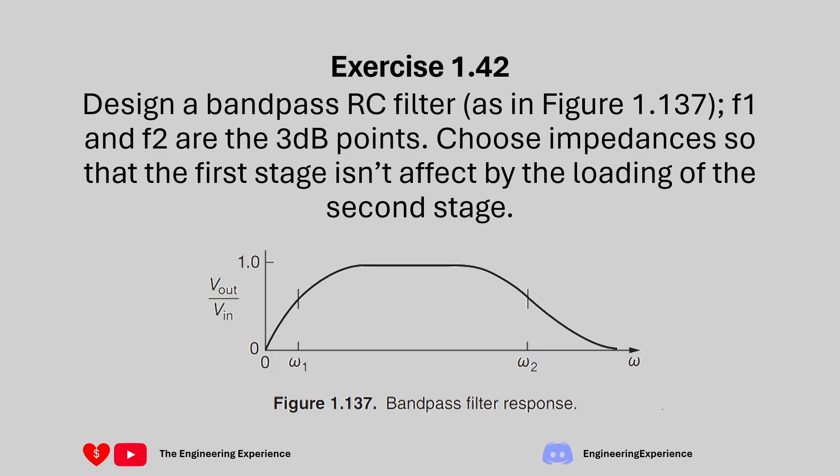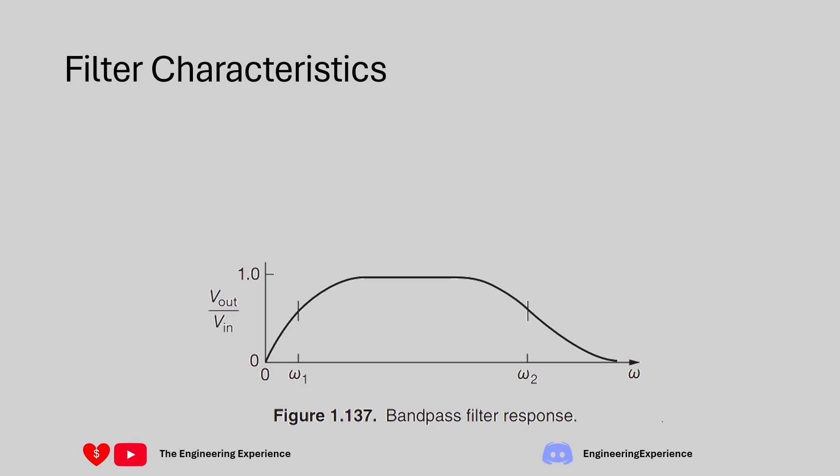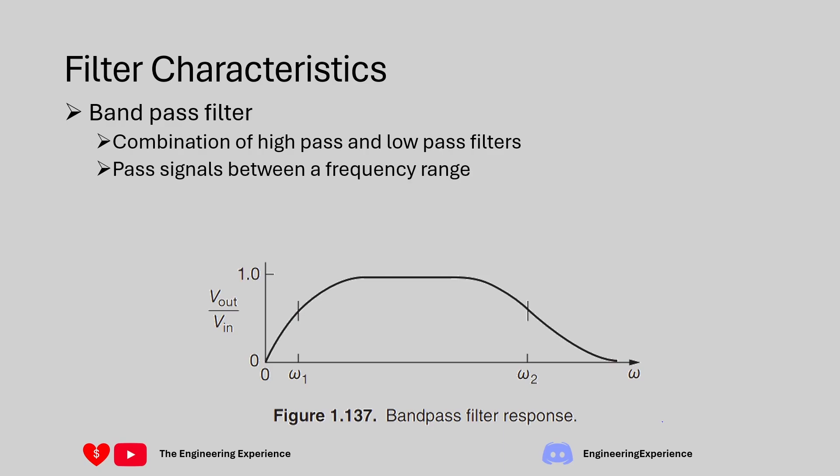The question is asking us to choose impedances so that the first stage isn't affected by the second stage. Information on load impedance or source impedance is not provided. First, let's define some filter characteristics. We know this is a bandpass filter and it's going to be a combination of high pass and low pass RC filters.